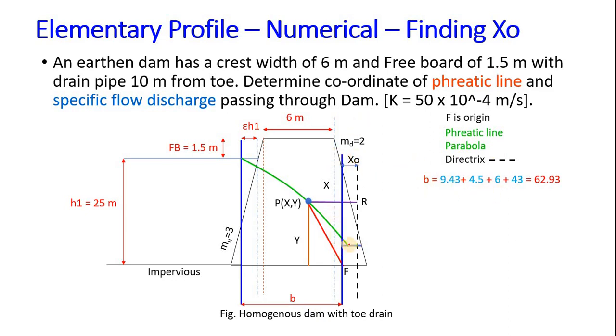Now let's find x₀. x₀ is the distance from the origin to the directrix. This is directrix. We know the property of parabola that PF is equal to PR. That is from origin to any point on the parabola, and the perpendicular drawn on the directrix is equal because eccentricity equals 1 in a parabola. So using that property, we know the value of PF. This red line represents PF, which is equal to square root of x² plus y² by the Pythagorean theorem.